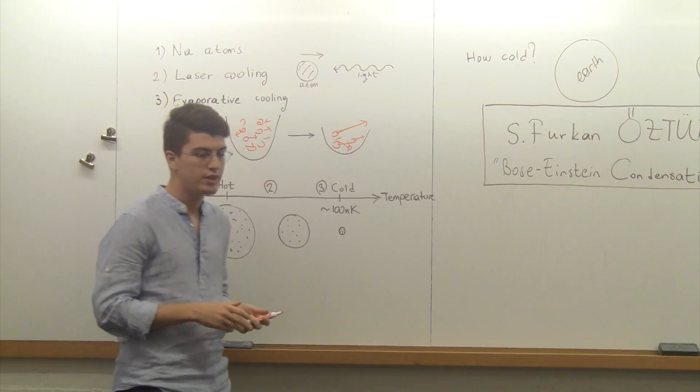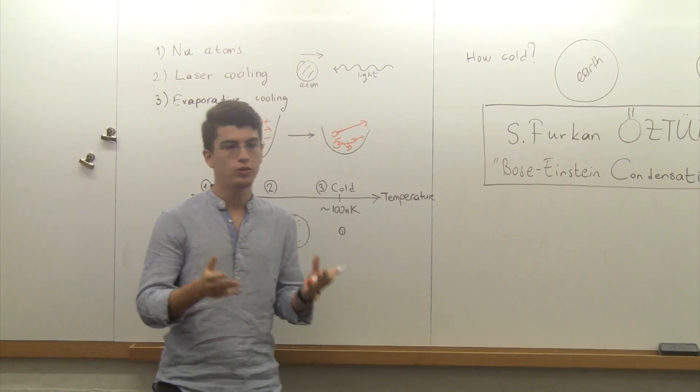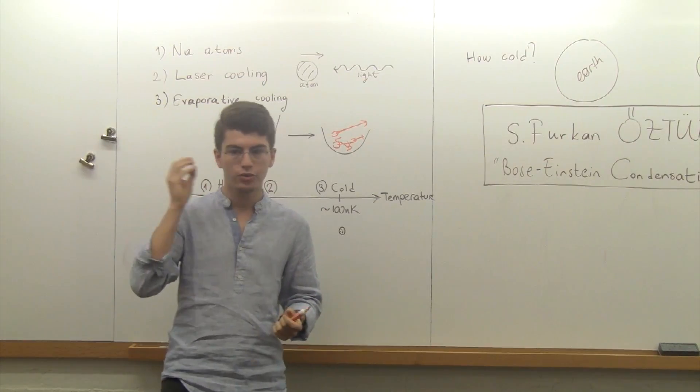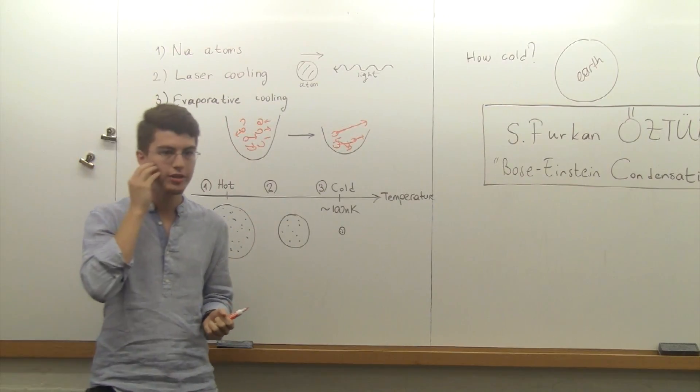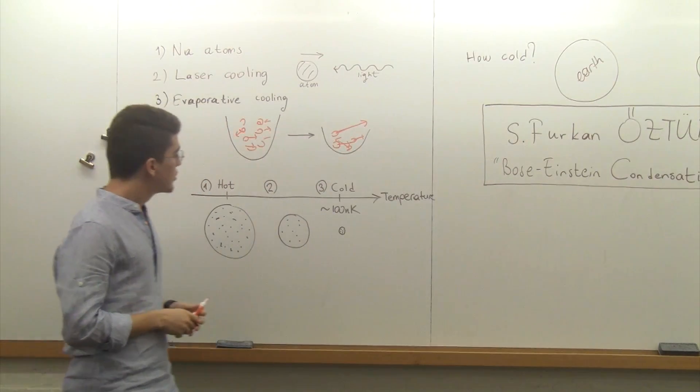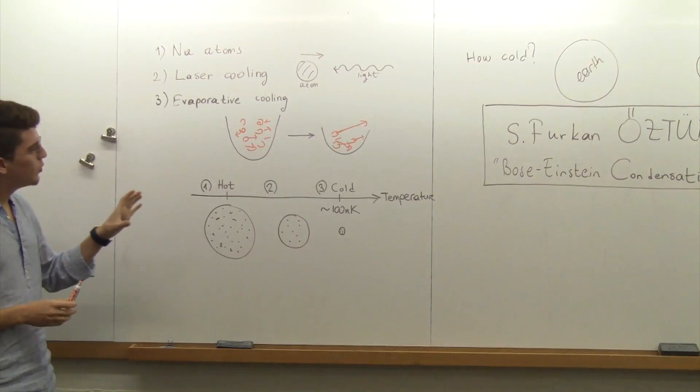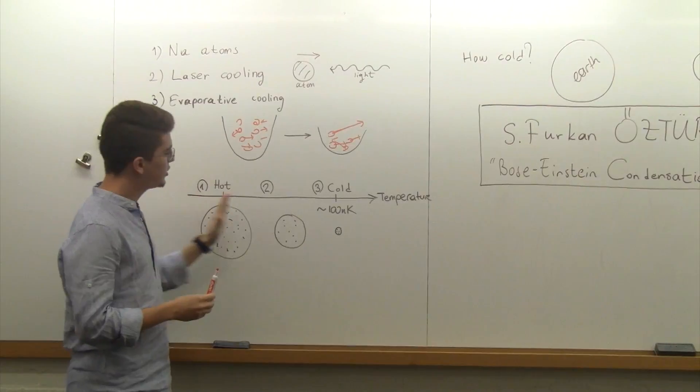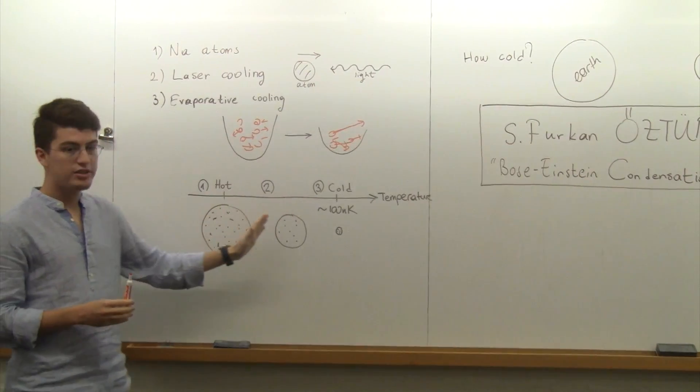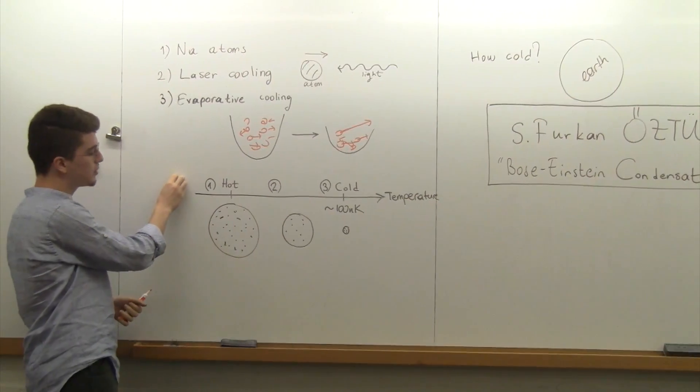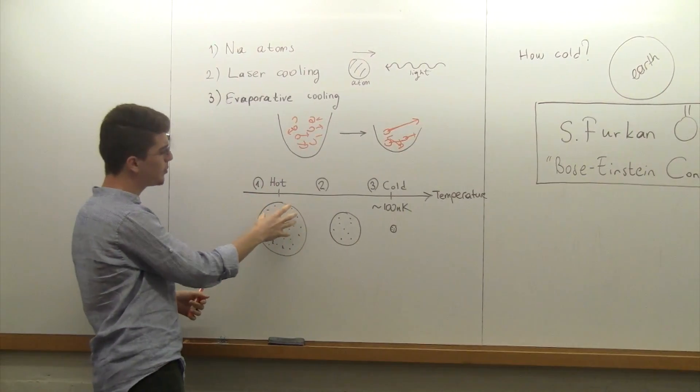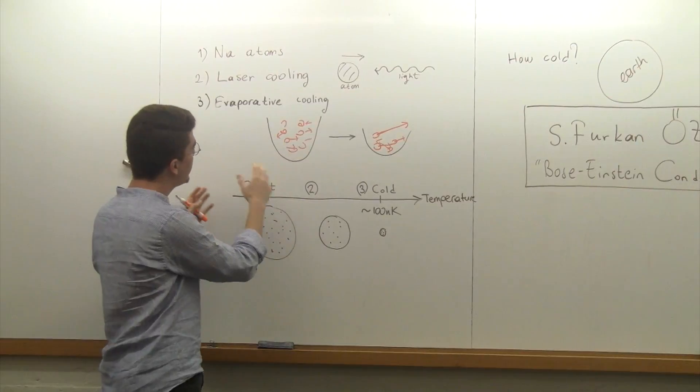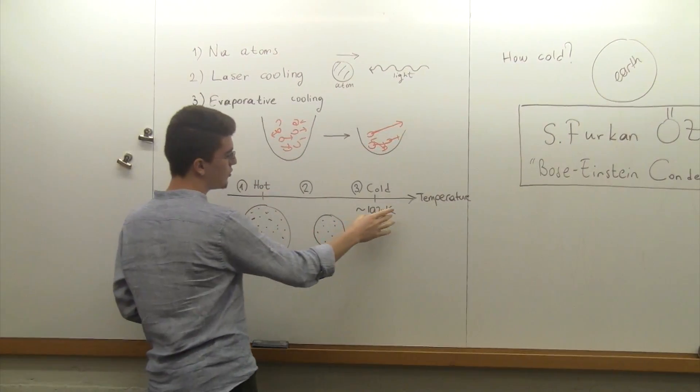This is the same thing that happens to your coffee or when you wash your face. The energetic atoms leave from your face, and the remainder - your face - becomes cooler. Having applied this, we reach nano-kelvin temperatures. What happens to our material can be seen in this diagram. We had a bunch of sodium atoms. They were hot. We applied laser cooling and our atoms shrink.